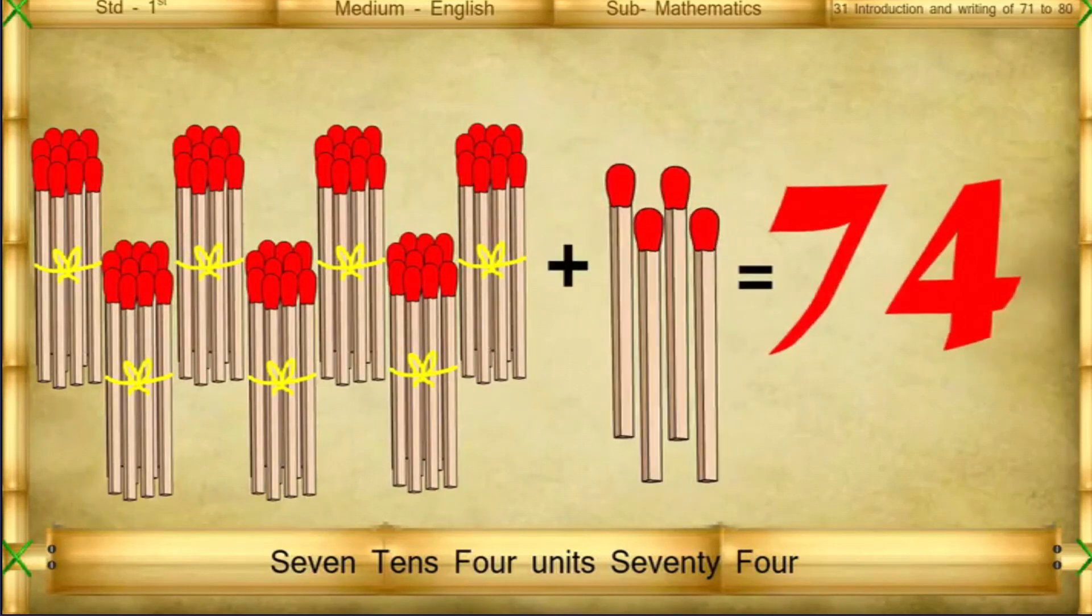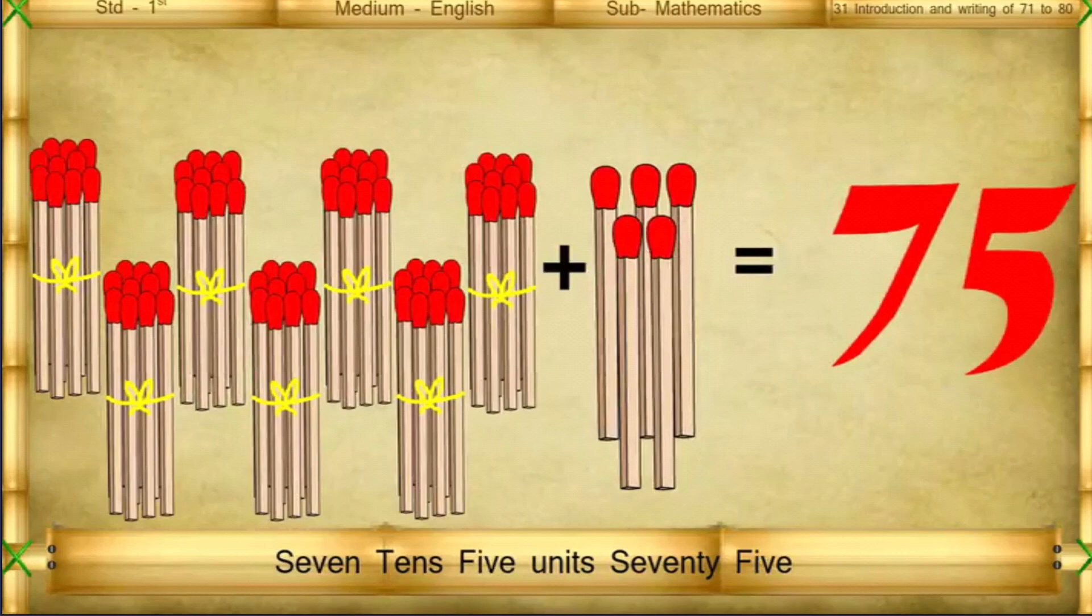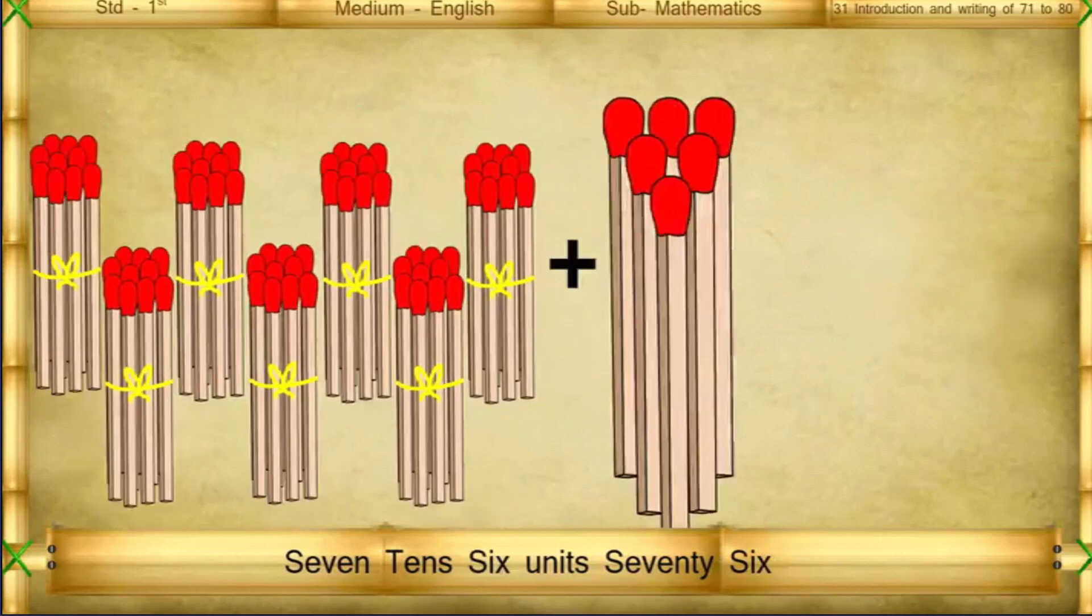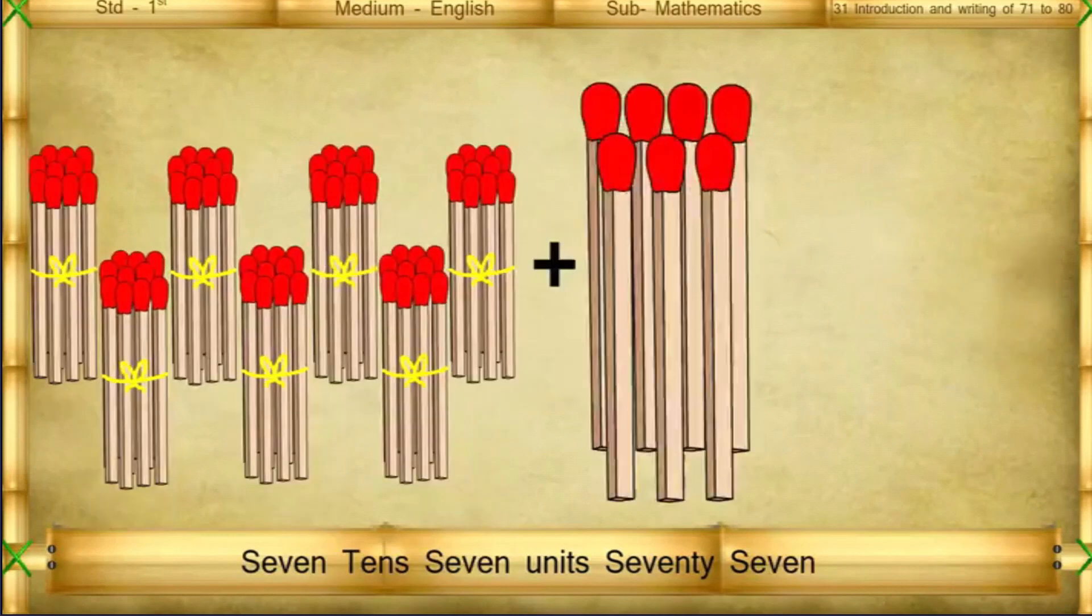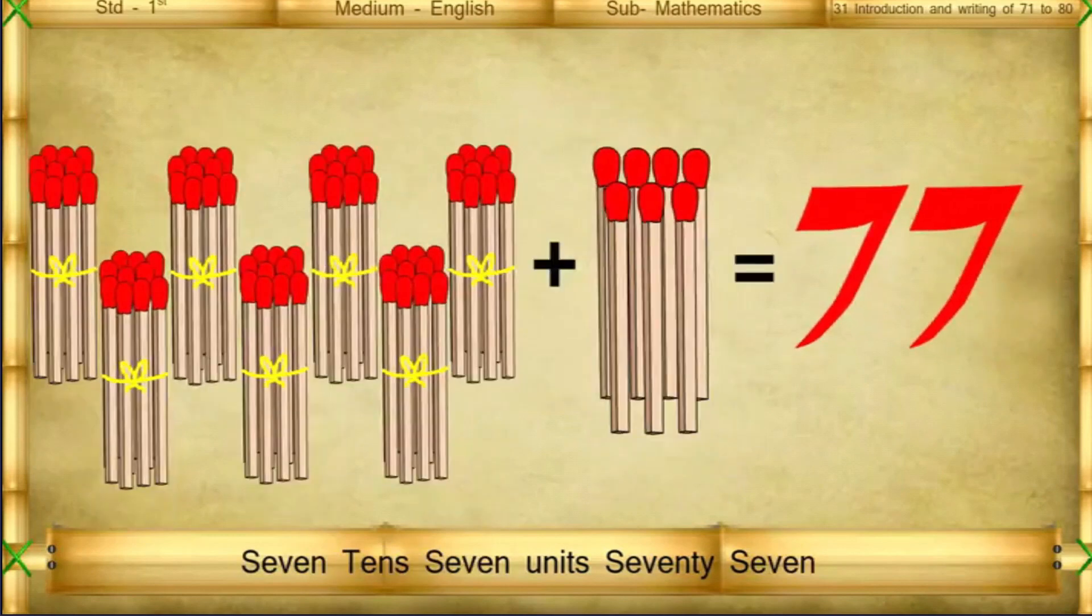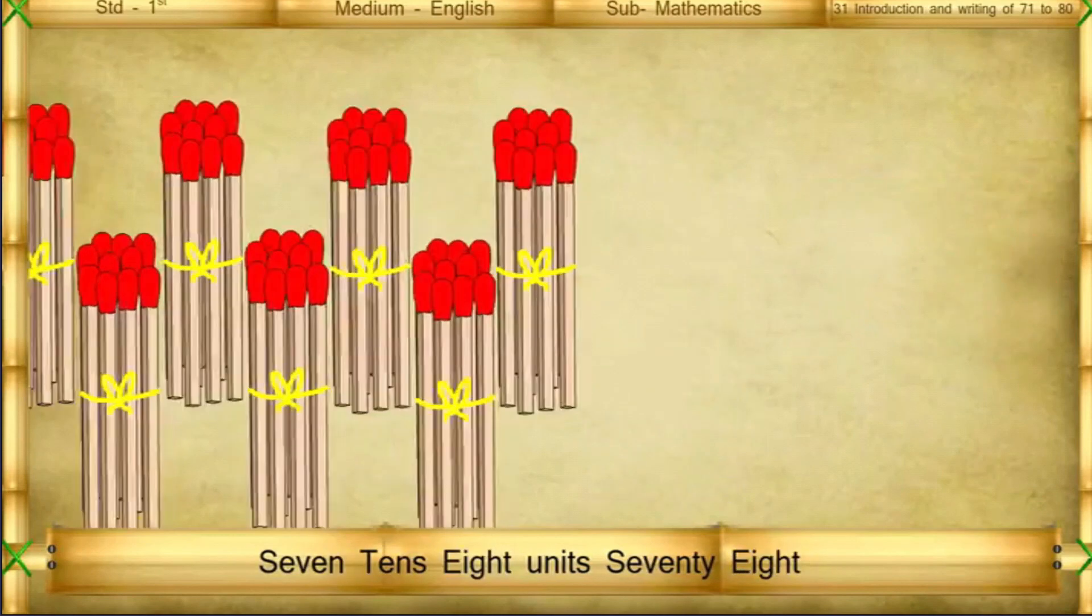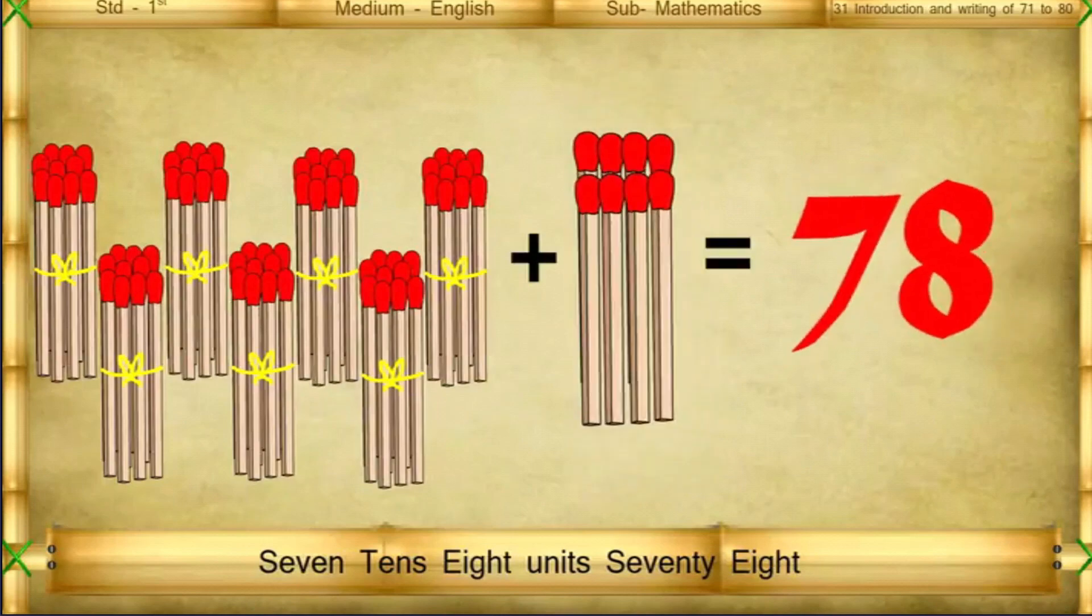7 tens 5 units: 75. 7 tens 6 units: 76. 7 tens 7 units: 77. 7 tens 8 units: 78.